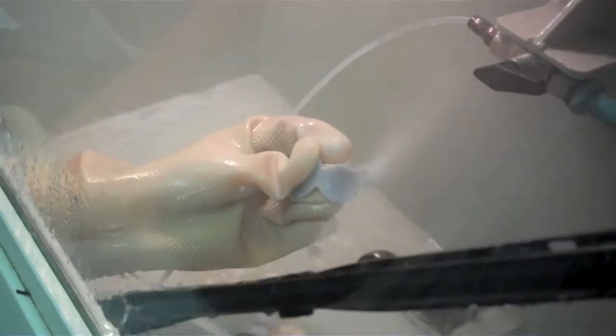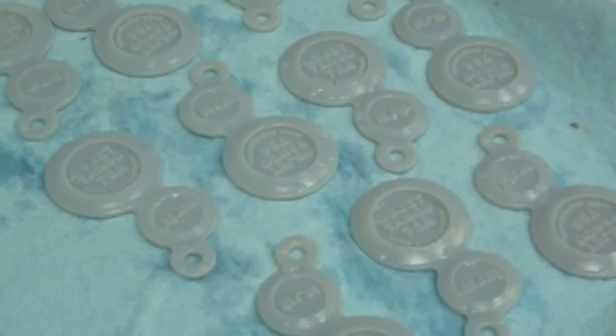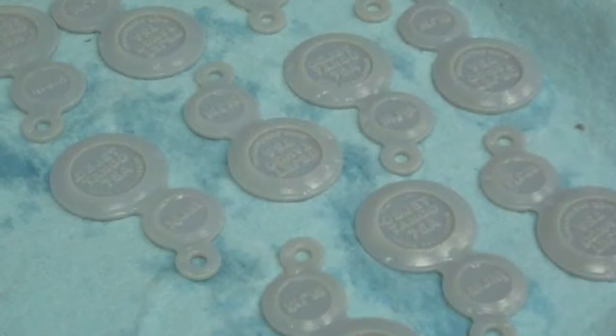The gel-like support material, which is specially designed to support complicated geometries, is easily removed by hand and water jetting. Think of it as pressure washing on a smaller scale. The high-pressure water washes off the support so that nothing is left afterward but the original part. The part is then set on a tray to air dry.